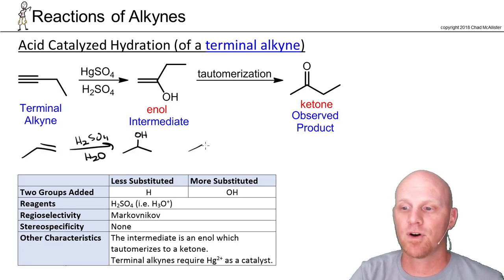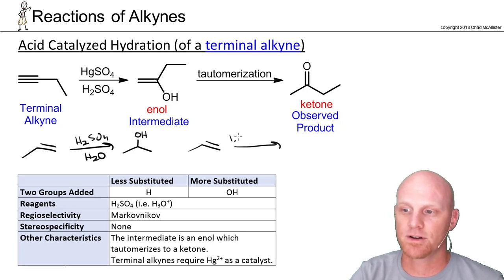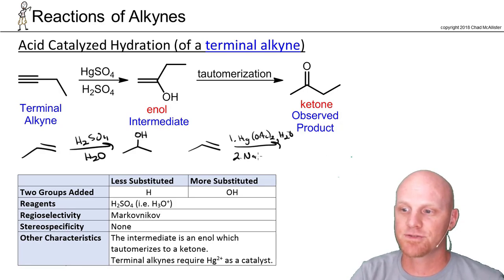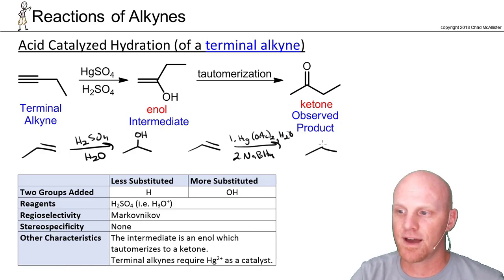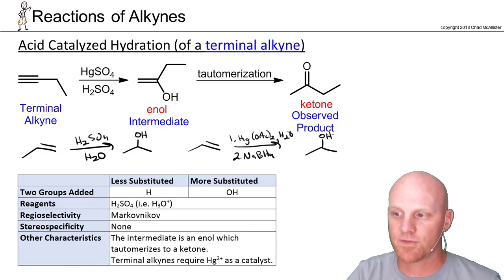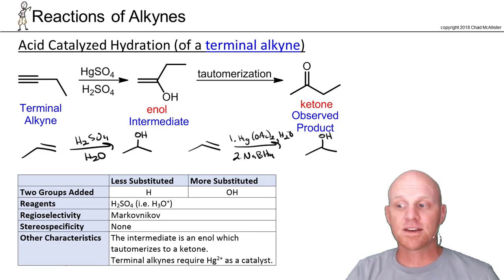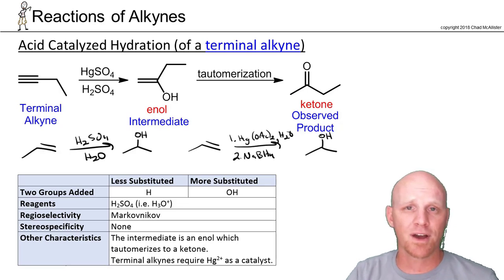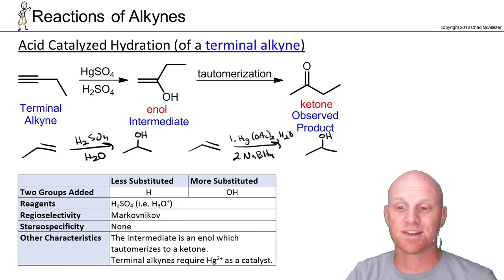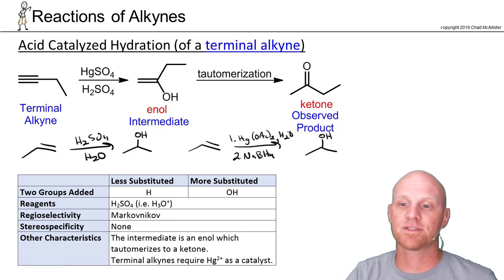We also had another set of reagents involving mercury: HgOAc2 with H2O, followed by NaBH4. This essentially does the same thing — adds H and OH in Markovnikov fashion. In this case, though, it doesn't go through a carbocation, so you don't have to worry about rearrangement. That's the big difference, but in the example chosen, both give exactly the same product.